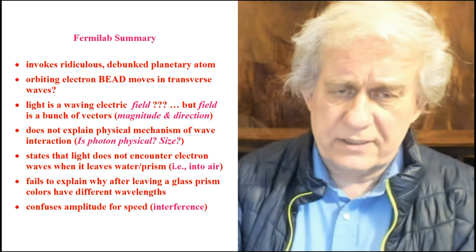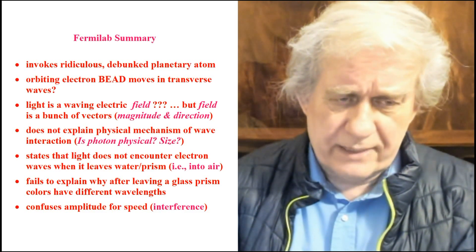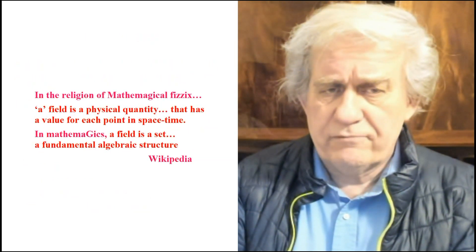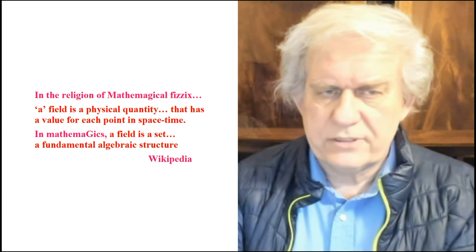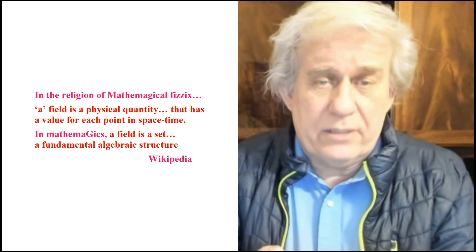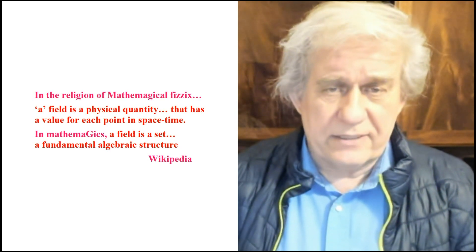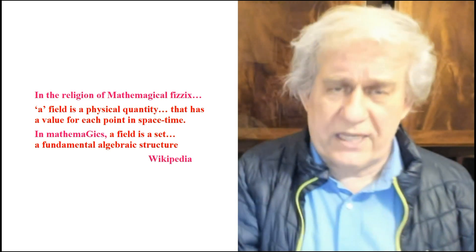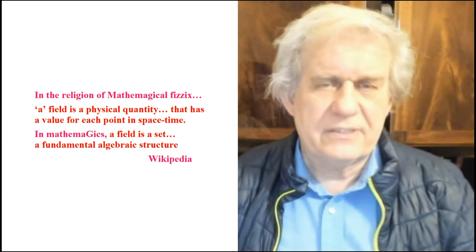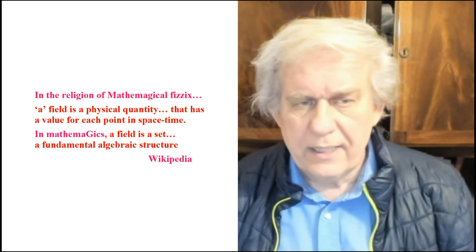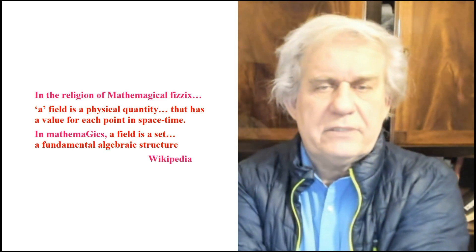Light is a waving electric field — this is what they say. But a field is a bunch of vectors: magnitude and direction. Here's proof. We go to the definition — at least in Wikipedia, you'll find something very similar. It says a field is a physical quantity. What is a quantity? Is that a physical object? Can you hold a quantity in your hand? You can hold a potato, you can hold a bag of potatoes — you might have ten potatoes, that's a quantity of ten. You don't hold ten. These people are saying a field is a quantity, and for the purposes of mathematical physics, it has a value for each point in spacetime. In other words, it's a concept.